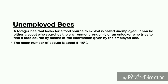Regarding Unemployed Foragers: a forager bee that looks for a food source to exploit is called unemployed. It can be either a scout who searches the environment randomly, or an onlooker who tries to find a food source by means of information given by the employed bee. The mean number of scouts is about 5 to 10 percent. The exchange of information among bees is the most important occurrence in the formation of collective knowledge.